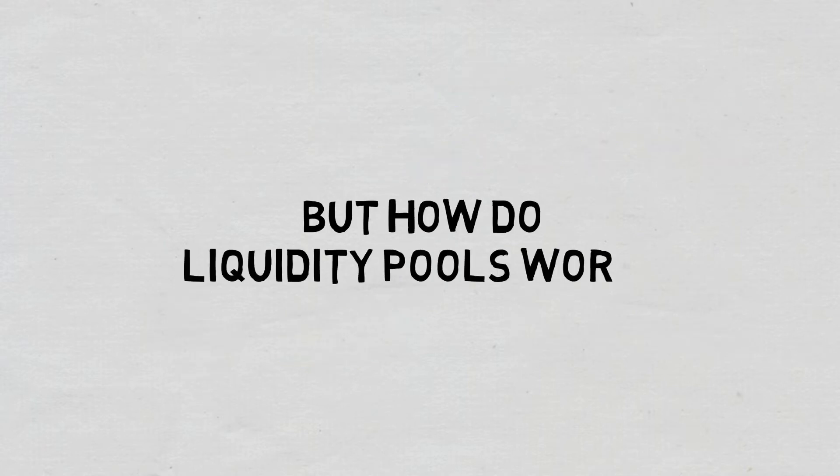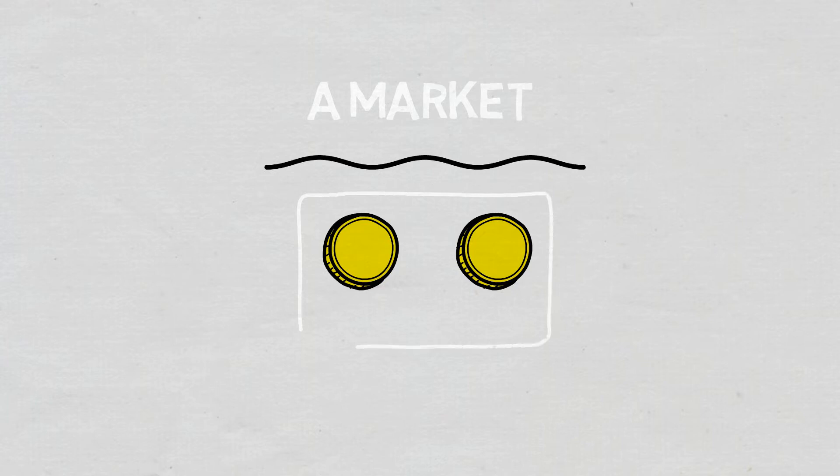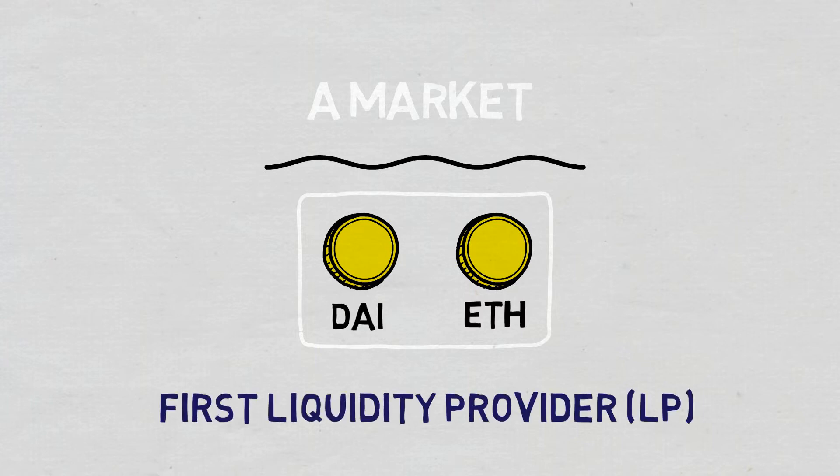But how do liquidity pools work? A basic liquidity pool holds two tokens and creates a market for that specific pair of tokens on a DEX. An example of a popular pair is DAI-ETH. The first liquidity provider is the one to set the initial price of the assets in the newly created pool and add an equal value of the two tokens. For example, you can start with $10 of DAI and $10 of ETH.